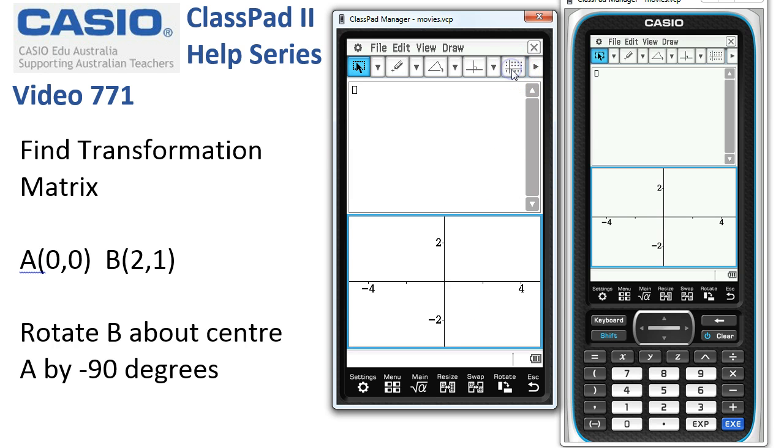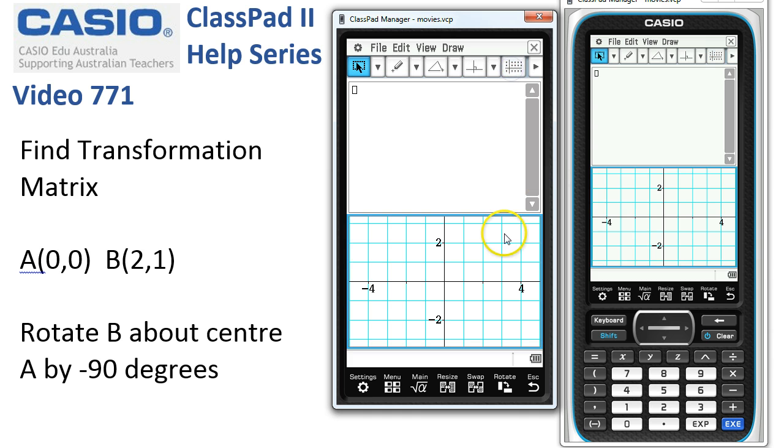Now we're going to turn on everything here: the axes, tap again to get a scale, tap again to get the dots, tap again to get the grid background.